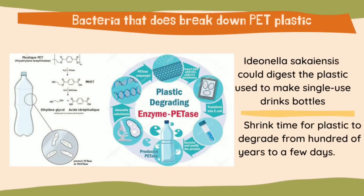However, there is hope. In 2016, scientists from Japan discovered a bacteria called Ideonella sakaiensis that could break down and digest single-use PET plastic. This could help shrink the time for plastic to degrade from hundreds of years to a few days. An enzyme known as PETase is secreted, and it splits esters in PET so that the smaller molecules can be absorbed by bacteria, which use the carbon in them as a food source.